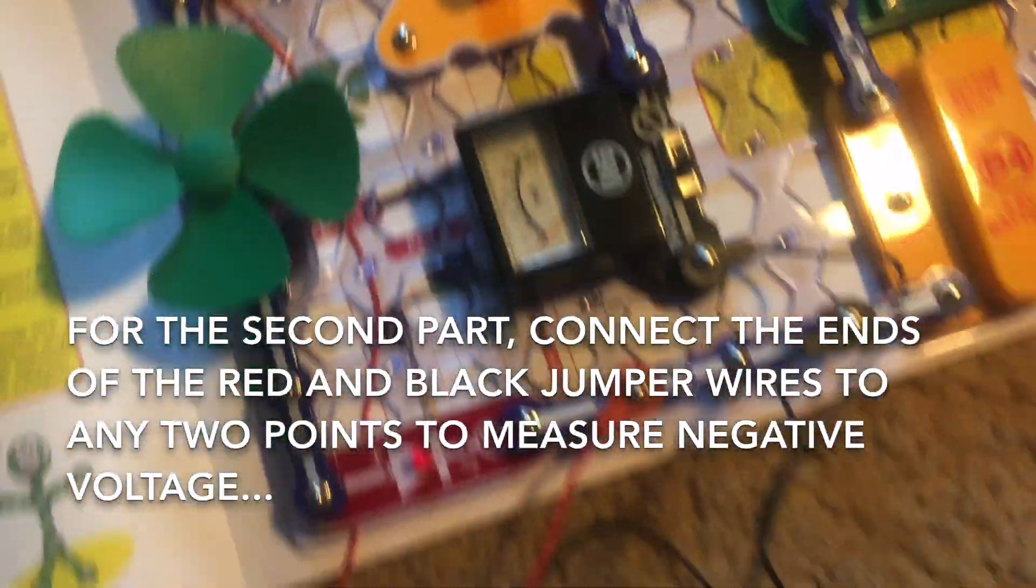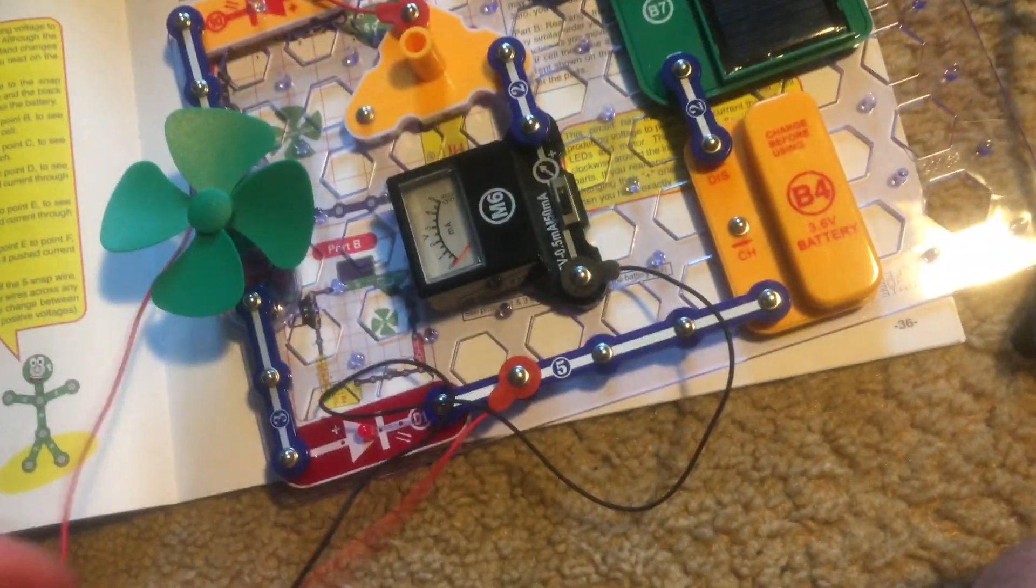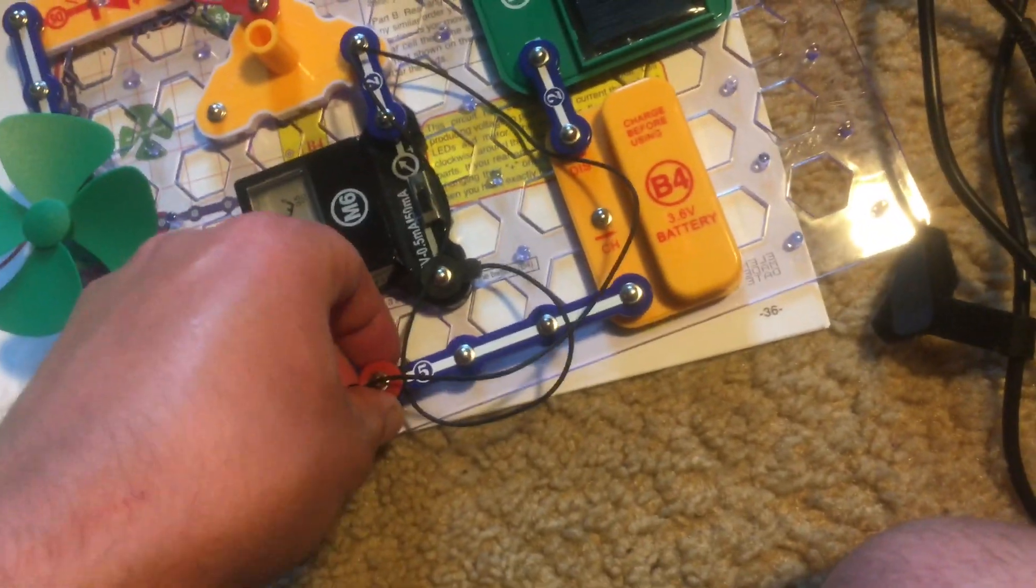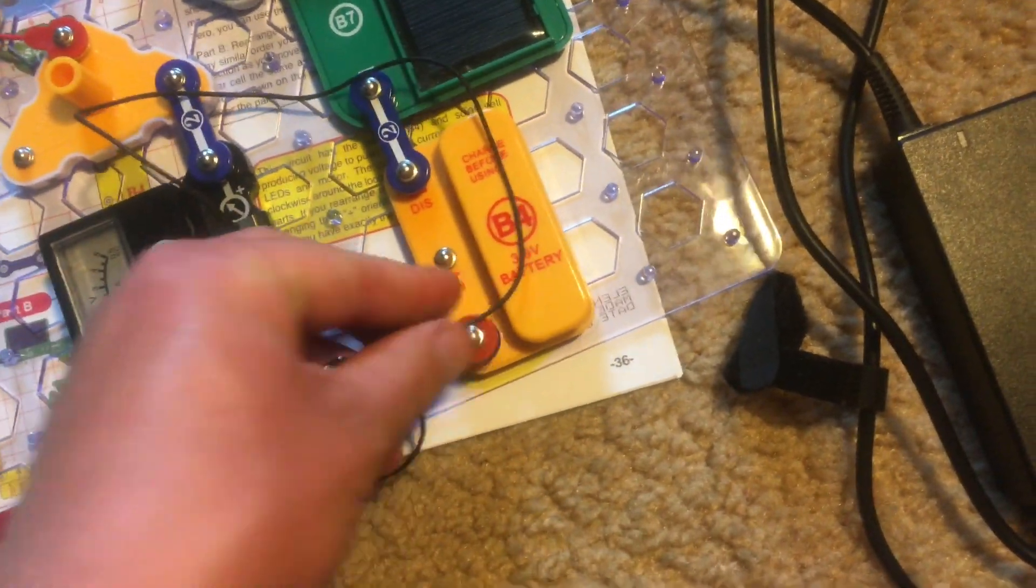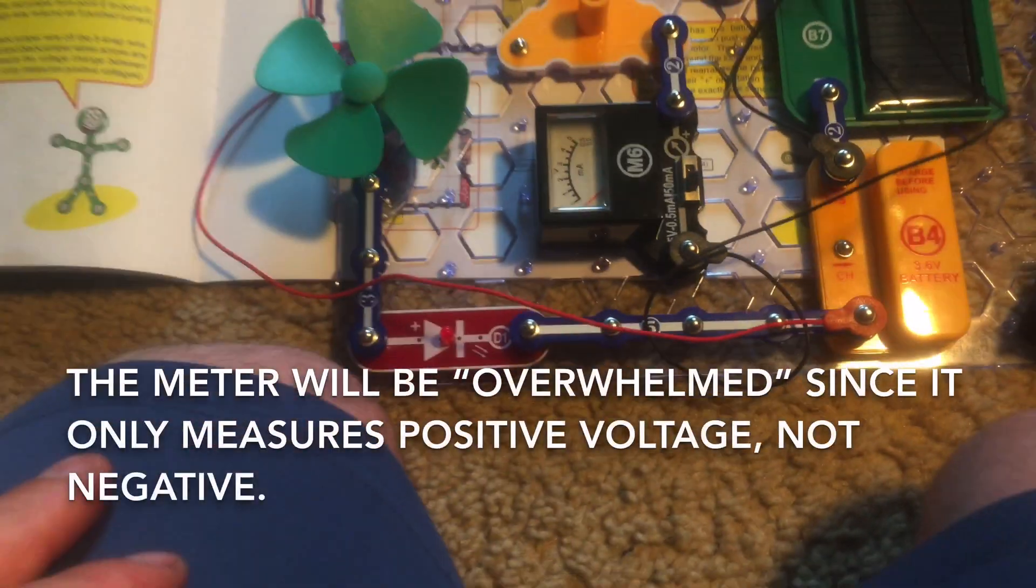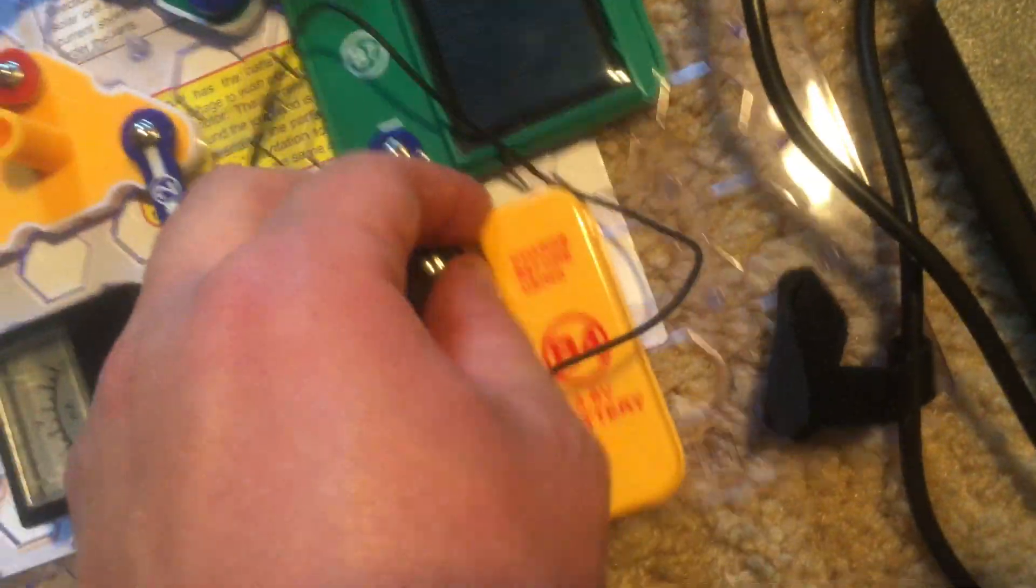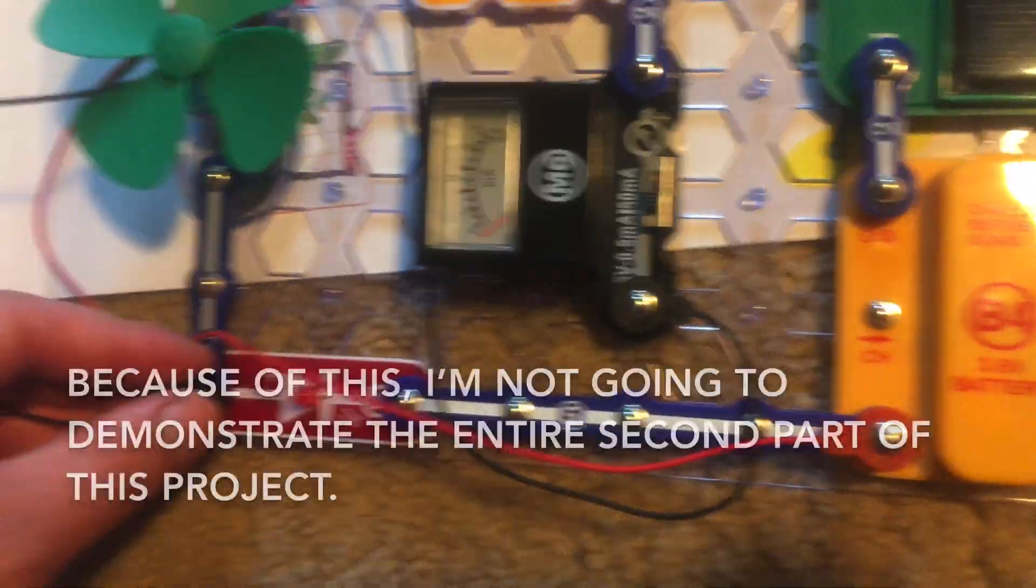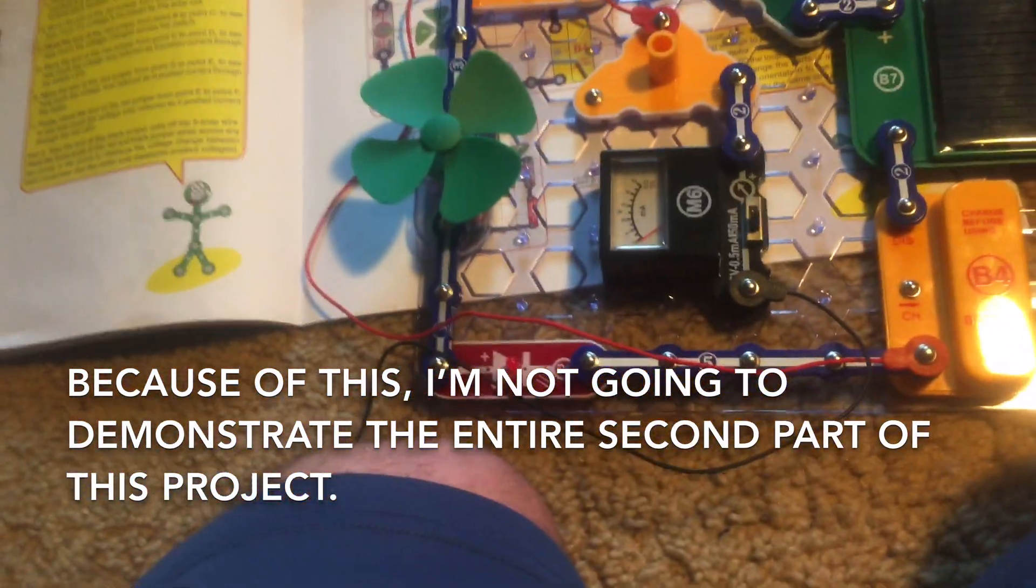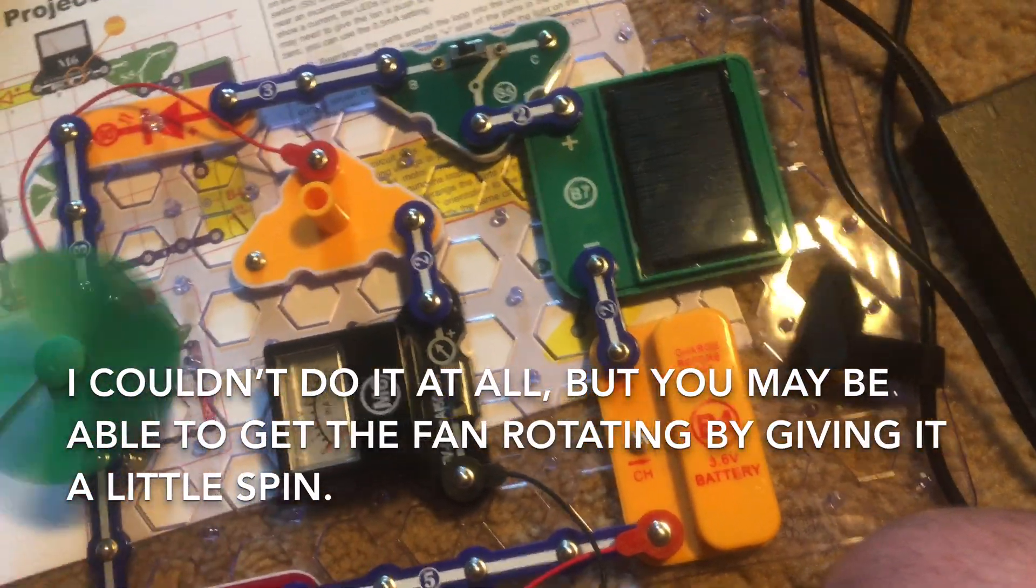Now, for part 2, we will take this end of the black jumper wire and then we can connect it and the loose end of the red one between any different points to see how the voltage is affected. But note that the meter will only measure positive voltage, not negative voltage. So, it looks like we have some negative voltage in this circuit. So, I am not going to really demonstrate the entire second part, but hopefully you'll have an idea of what it is like. Now, sometimes you may need to give the fan a spin to get it started, but you need a lot of light for that.